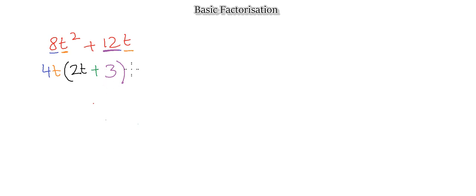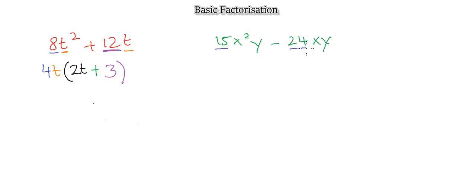One last example: 15x²y − 24xy. Go ahead and pause the video to try this yourself. Working through it: the common number factor of 15 and 24 is 3. x appears in both terms, and y appears in both terms, so our common factor is 3xy outside the bracket.